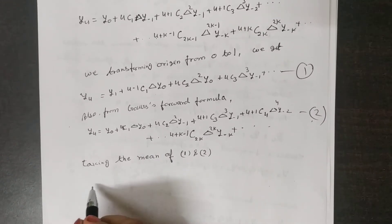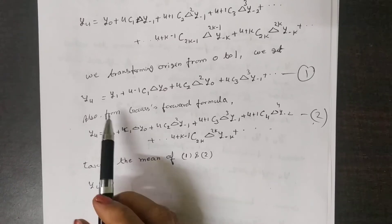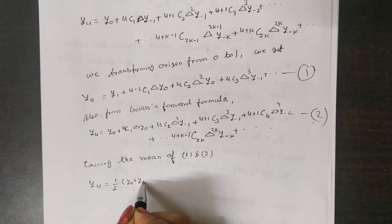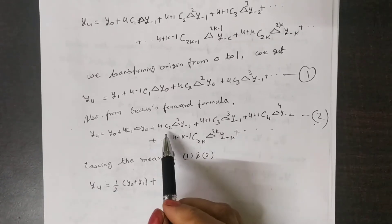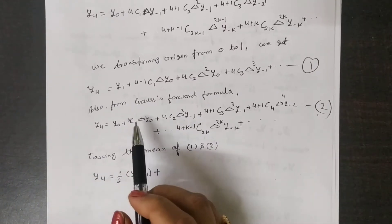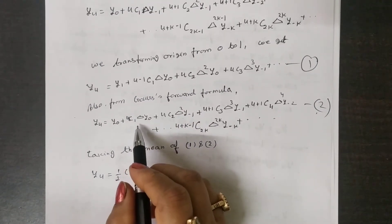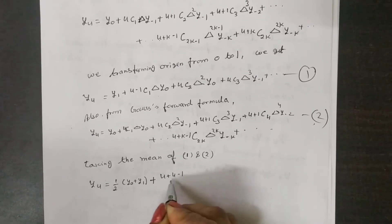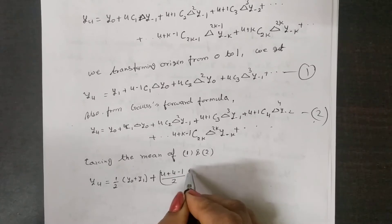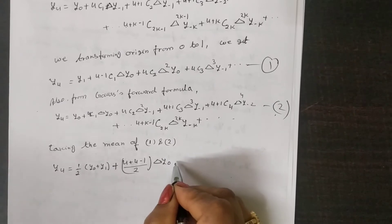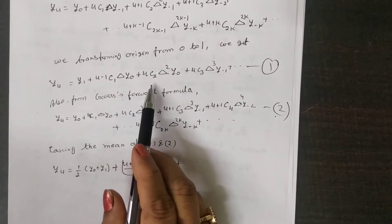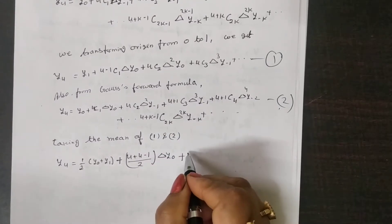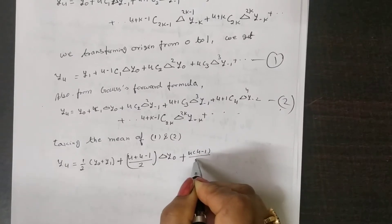We get y(u) which is equal to: here you see, (y0 + y1), so you can write here (1/2)·(y0 + y1). Next, here is u·C1, that is you can write (u - 1/2)·delta·y(0). Next, here is u·C2, that is u·(u-1) / factorial(2), and this same term.